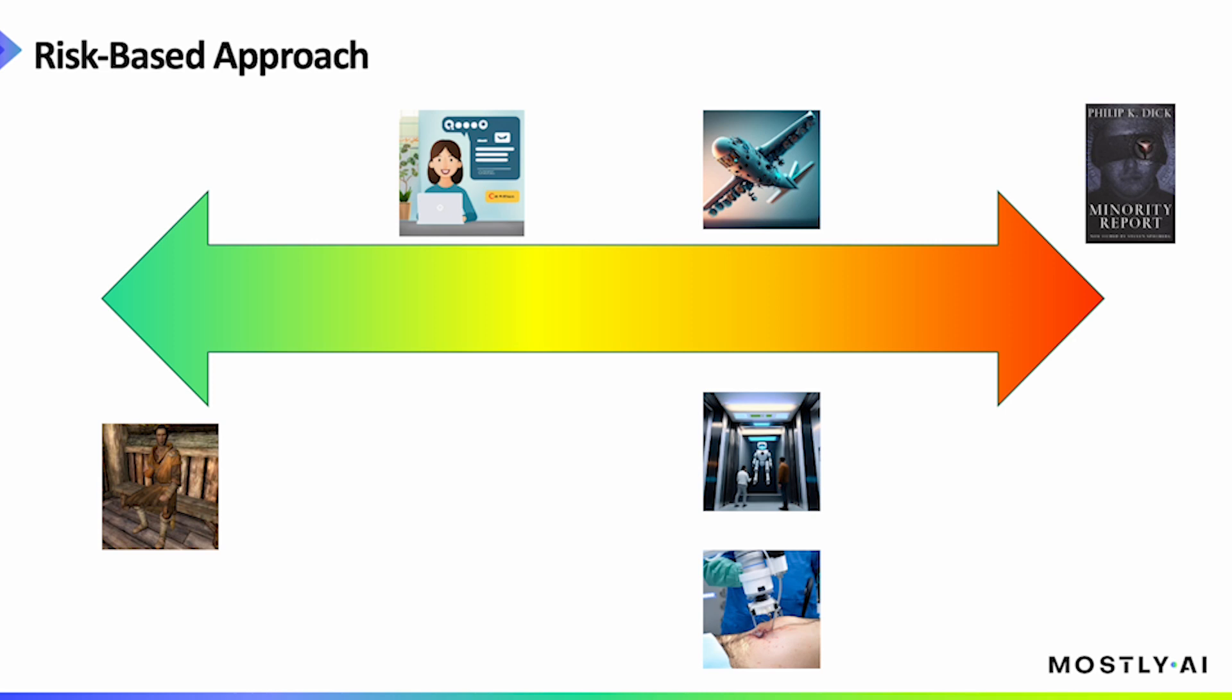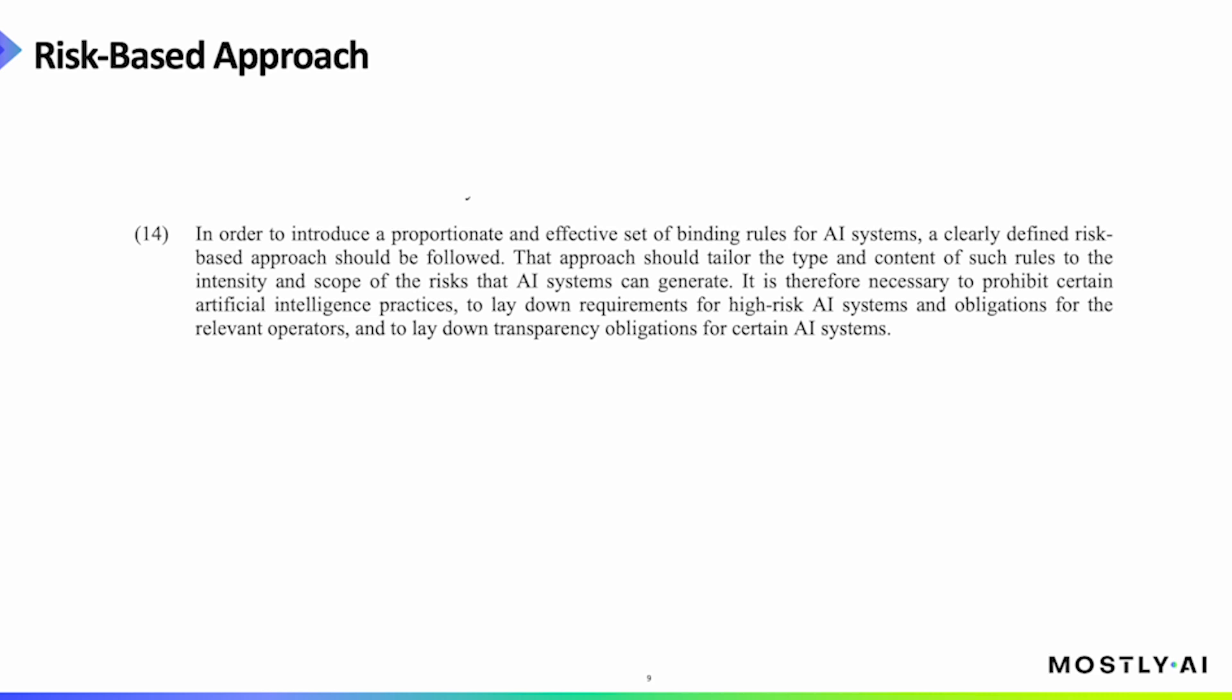So this risk-based approach makes a lot of sense, in my opinion, since we do not need strict rules for AI used in computer games, but we do need very strict rules for AI used in open-heart surgery or biometric identification. In the words of the EU legislator, the risk-based approach should tailor the type and content of binding rules for AI systems to the intensity and scope of the risks that AI systems can generate.